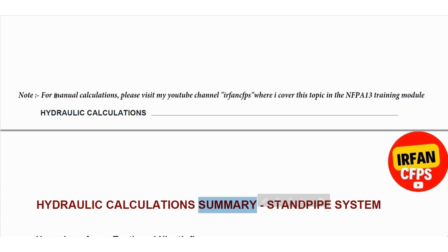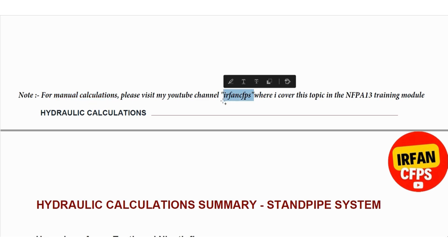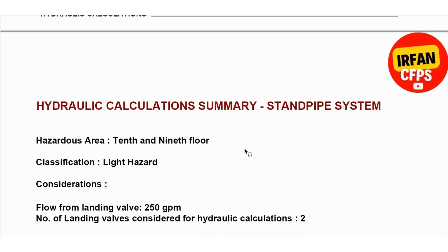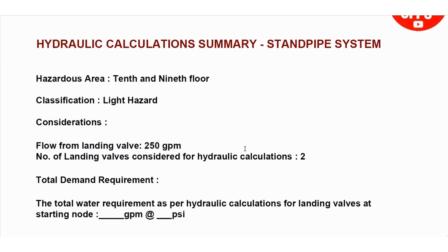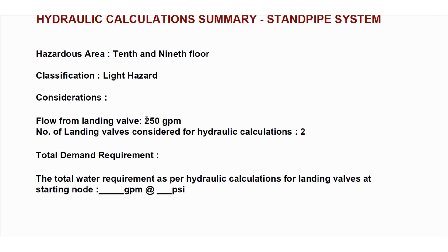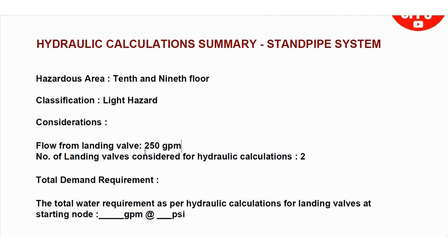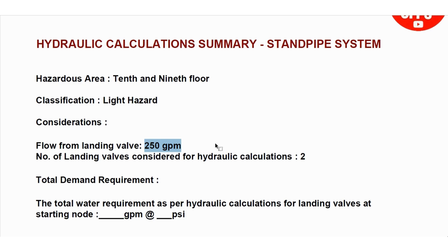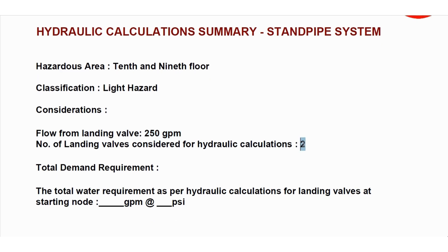If you want to know the manual procedure for this standpipe system, you can check my YouTube channel Irfan CFPS where I covered this topic. In Alight Fire, before we proceed to enter the pipe input data, you need to make sure you create a summary sheet where you mention flow from each landing valve. As per NFPA 14, it shall be 250 GPM for a 2.5 inch hose valve. We need to consider two remotest landing valves in our hydraulic calculation.